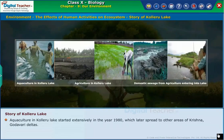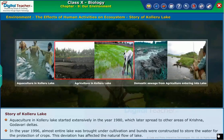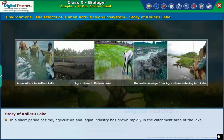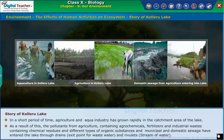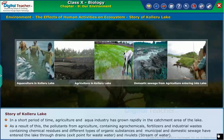Aquaculture in Kolaru Lake started extensively in the year 1980, which later spread to other areas of the Krishna-Godavari delta. In the year 1996, almost the entire lake was brought under cultivation and bunds were constructed to store water for the protection of crops. This deviation affected the natural flow of the lake. In a short period of time, agriculture and aqua industry grew rapidly in the catchment area. As a result, pollutants from agriculture containing agrochemicals, fertilizers, industrial wastes containing chemical residues, organic substances, and municipal and domestic sewage entered the lake through drains, wastewater exit points and rivulets.